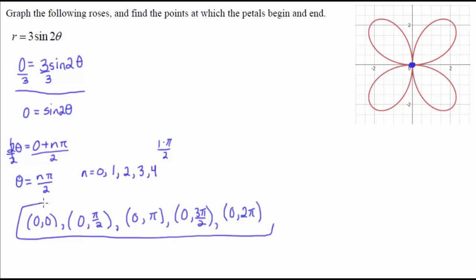And the reason there's five of them is because we had four petals. So we needed one more point than how many petals there were. So if there were say six petals, I'd have to have seven points, or if there were three petals, I would have to have four, but otherwise the process would pretty much work out to be the same.